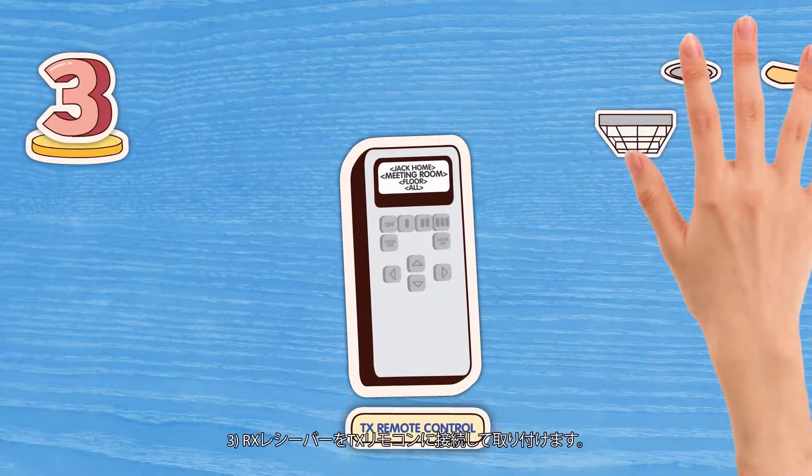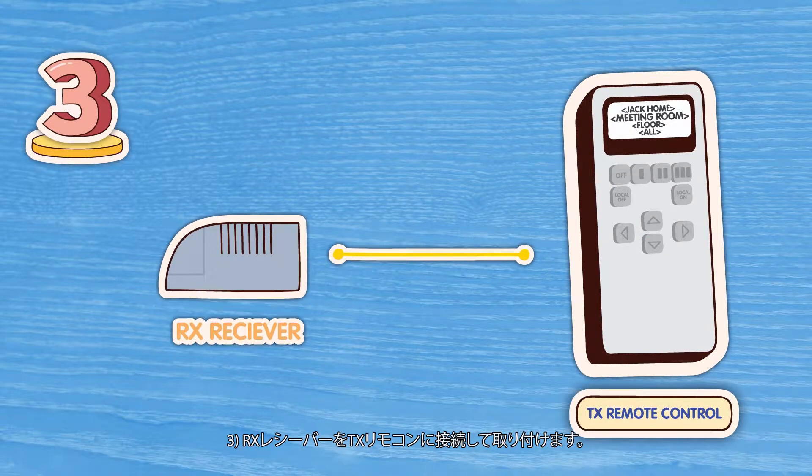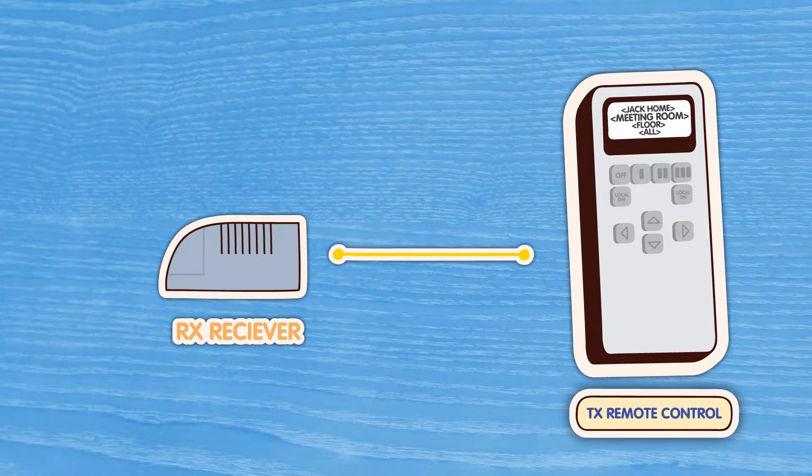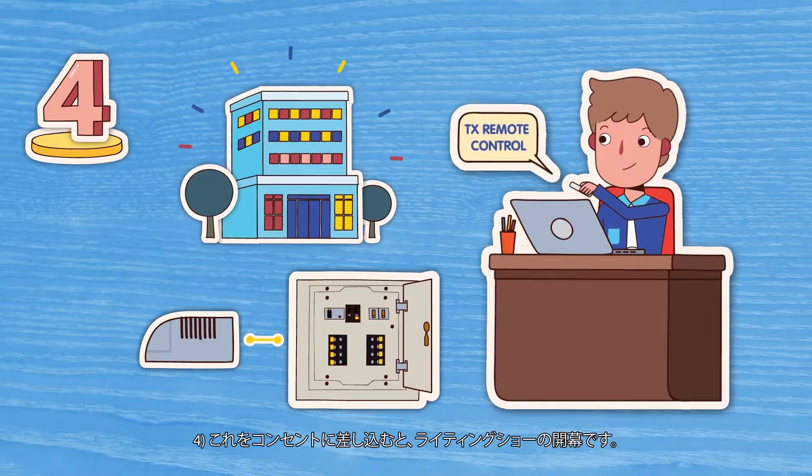3. Connect the RX receiver with TX Remote Control so you can install it. 4. Plug it in and enjoy the light show.